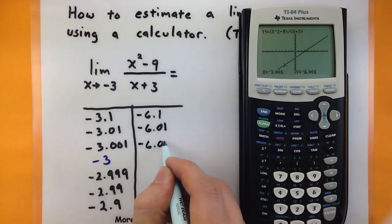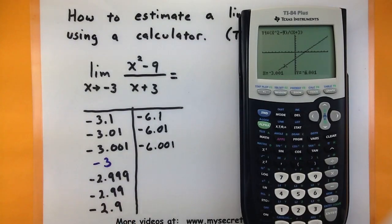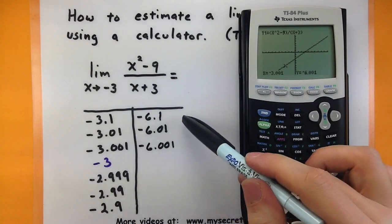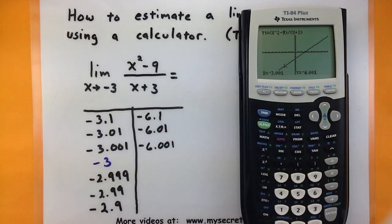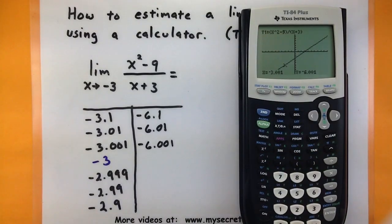So you can see that when we have these x values on the left side, it looks like things are getting close to negative 6. And that would be a pretty good guess for what the limit is.